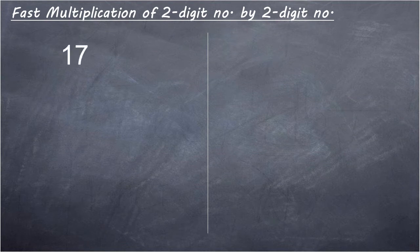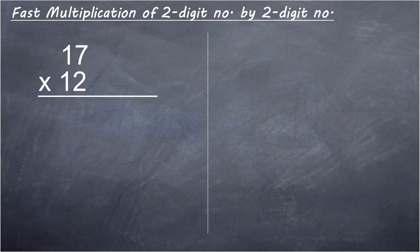Let's do the multiplication of 17 multiply 12. 17 and 12 is nearest to 10, so we will use base 10 to solve this problem.